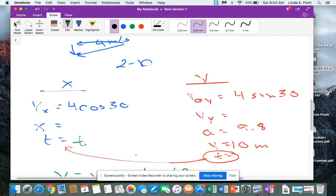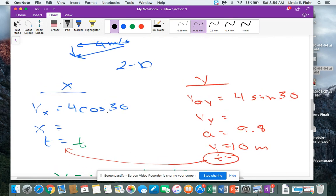So remember, what's happening with a two-dimensional problem is I set up what I know. In the x direction, I don't need to do kinematics because there is no acceleration, so it's going to move at a constant velocity, which means I can simply use v equals d over t.